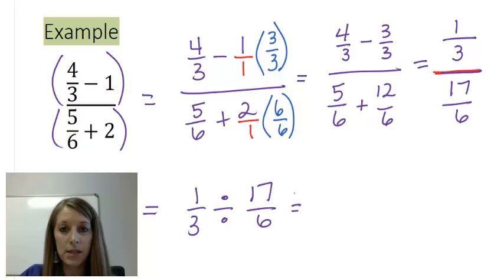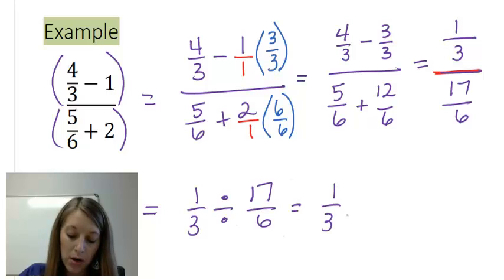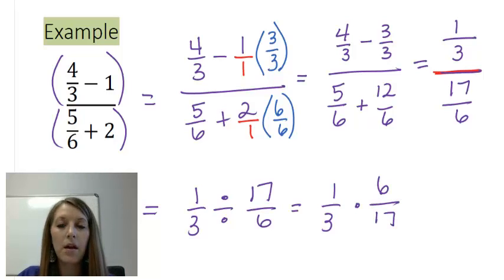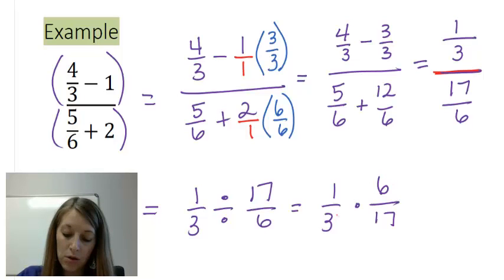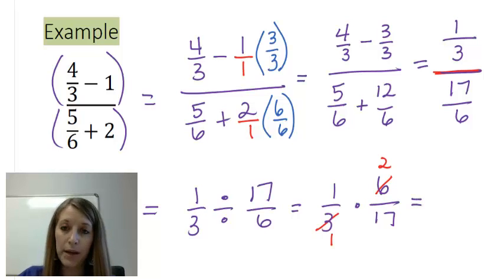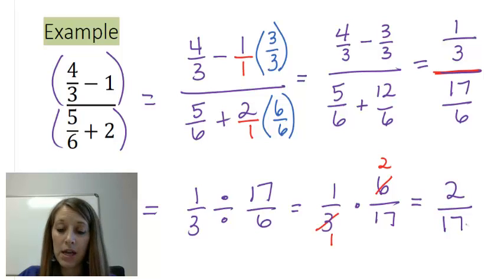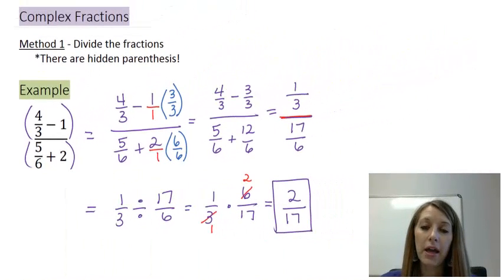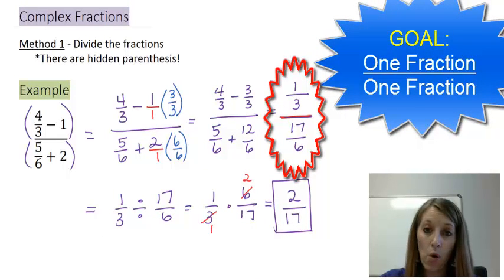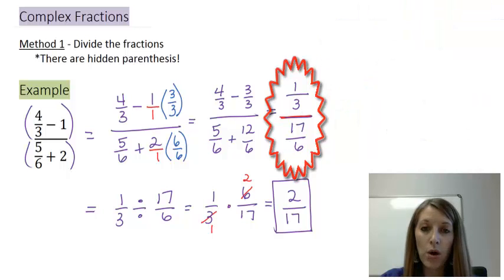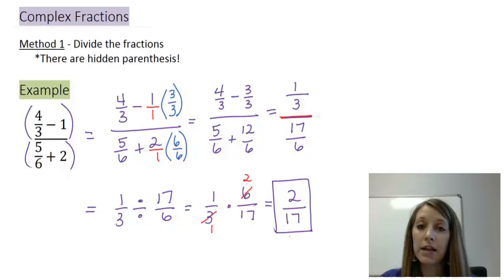We learned how to divide fractions — you flip the second fraction and multiply. So one-third times six over seventeen. We multiply fractions straight across, but I emphasize reducing first. I can reduce six and three: three goes into itself once, and into six twice. I cannot reduce anything else, so multiplying straight across: one times two gives me two, and one times seventeen gives me seventeen. That cannot be reduced further, so my final answer is two over seventeen.